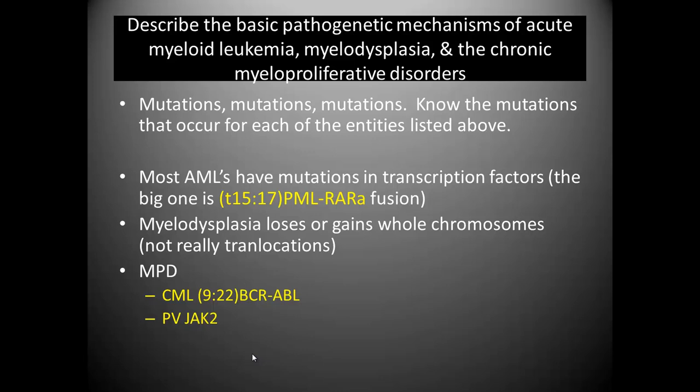Myelodysplasia means that you have a dysplasia of the myeloid line in the bone marrow. This is kind of like the dysplasia we talked about in fundamentals — you have atypical changes, it's not quite cancer, but it's not normal. It's a dysplasia, which is usually one of the first steps on the way to cancer. These cells can lose or gain whole chromosomes — for example a 5q deletion or multiple copies of chromosome 5. We usually don't characterize specific translocations; we just test for them, see that there's a bunch, and that fits with myelodysplasia.